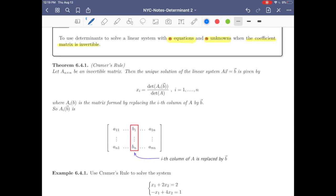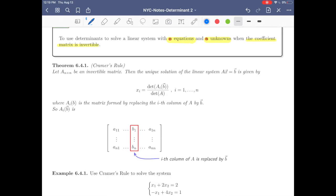Theorem 6.4.1, which is indeed Cramer's rule. Let A be n by n, an invertible matrix. Then the unique solution—if you remember by a theorem we had before, when the coefficient matrix of a linear system is invertible, then there's a unique solution. Then that unique solution...